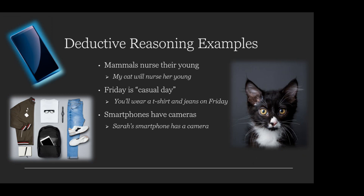Here are some examples of deductive reasoning — you go from a general rule to apply it to your specific situation. Mammals nurse their young; that's a scientific principle generally taken to be true, so you can assume that your cat will nurse her young when she has babies. Friday is casual day at work, so therefore you'll wear a t-shirt and jeans on Friday. Smartphones have cameras; therefore, Sarah's smartphone has a camera.